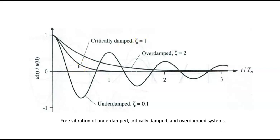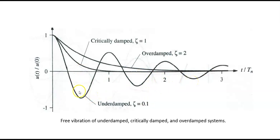If the system is over damped, the damping coefficient is greater than 1, and again the system would return to its equilibrium position with no oscillation. If the system is under damped, the damping coefficient is less than 1, and the system would return to its equilibrium position after multiple oscillations, and the amplitude of the oscillation gradually decreases until the system returns to its equilibrium position.